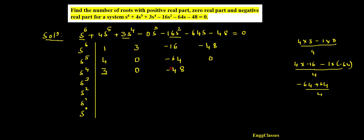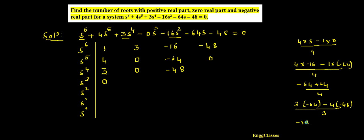Moving on to the s^3 row. The first element: 3 into 0 minus 4 into 0, divided by 3, which turns out to be 0. The next element: 3 into minus 64 minus 4 into minus 48, divided by 3 — that is minus 192 plus 192, which is also 0. So this row completely becomes 0, which is the special case of Routh-Hurwitz criterion.